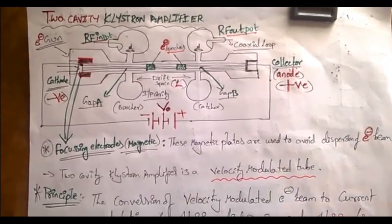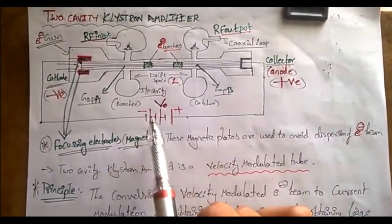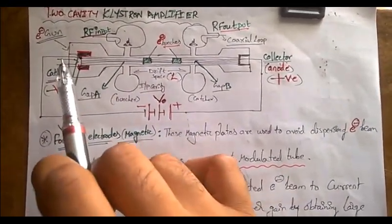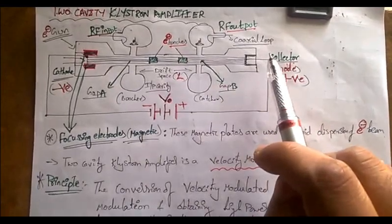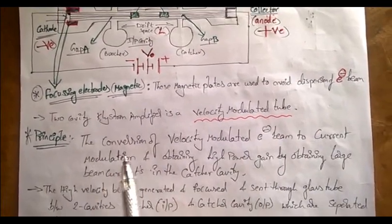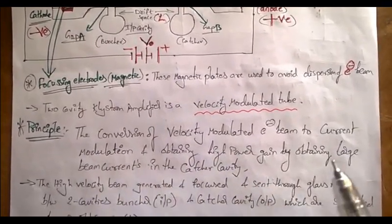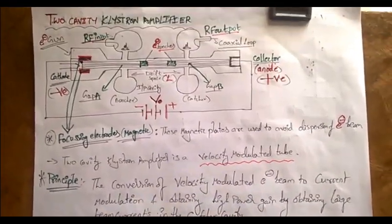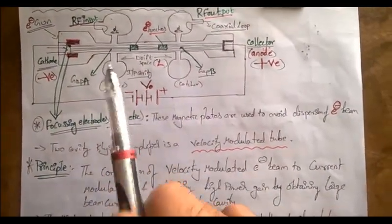Now let us see the construction and operation of the two cavity klystron amplifier. The voltage source is connected with the negative terminal as input — we give electrons at the input — and the positive terminal is connected at the output. The main principle is the conversion of a velocity modulated electron beam to current modulation, and obtaining high power gain.